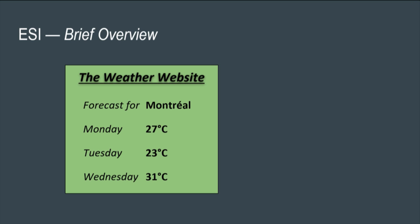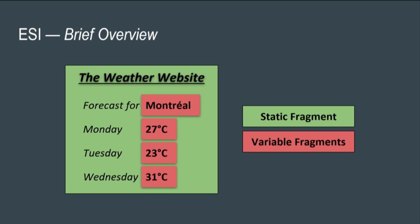The documentation isn't going to help us, so let me explain it. Looking at a very primitive web page example — a weather page — to the end user this is a single HTTP response, but to the ESI caching server this is multiple fragments. These fragments were invented to invalidate individual elements of a web page instead of invalidating the whole document.